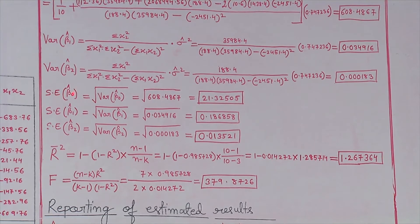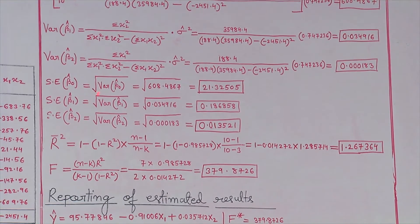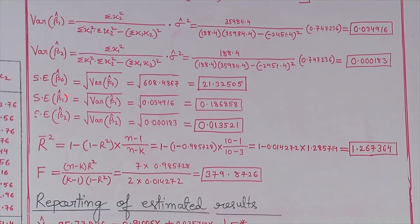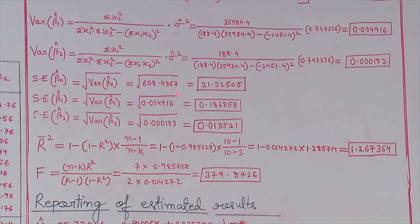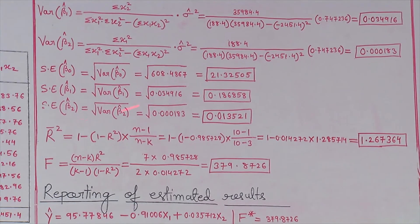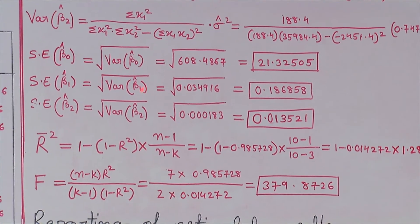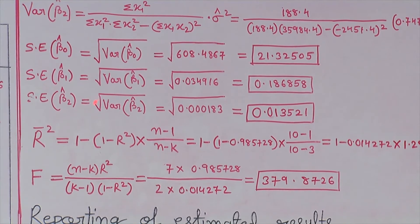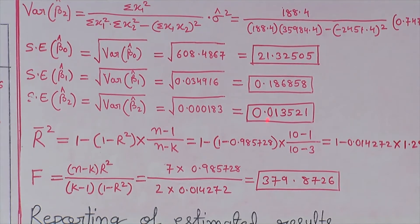The standard error of β̂₀, β̂₁, and β̂₂ can be estimated from their respective variances. The standard error of β̂₀ = √(608.4867) = 21.32505. The standard error of β̂₁ = √(0.034916) = 0.186858. The standard error of β̂₂ = √(0.000183) = 0.013521.